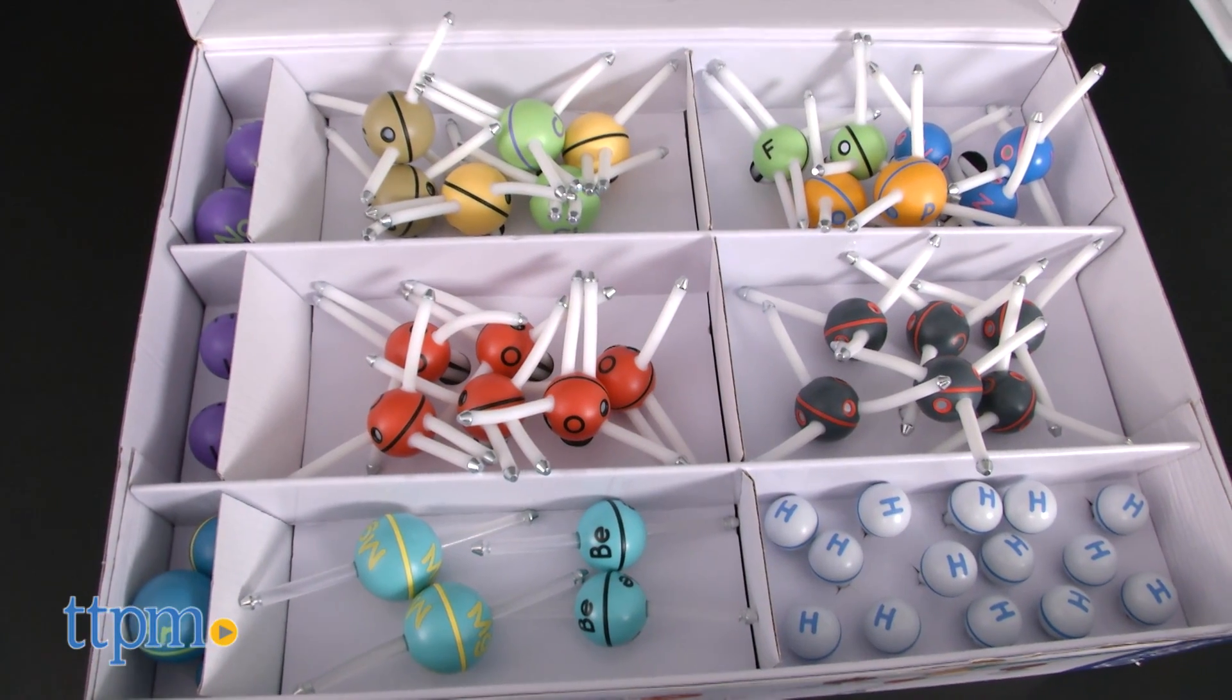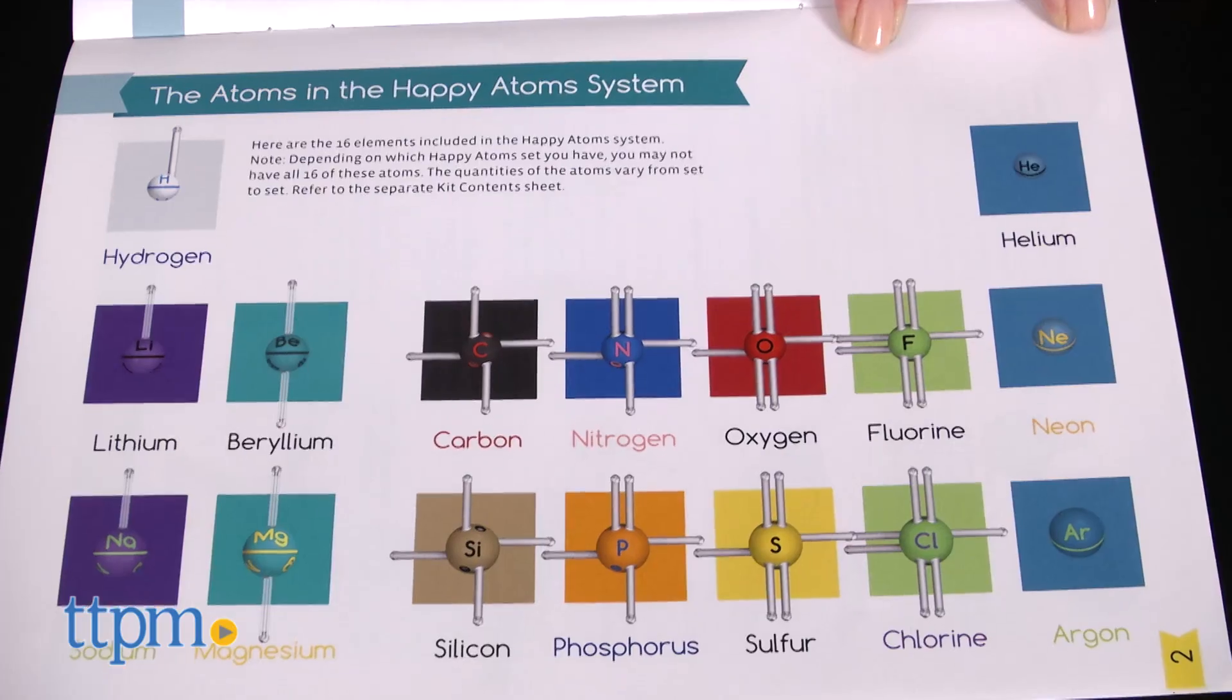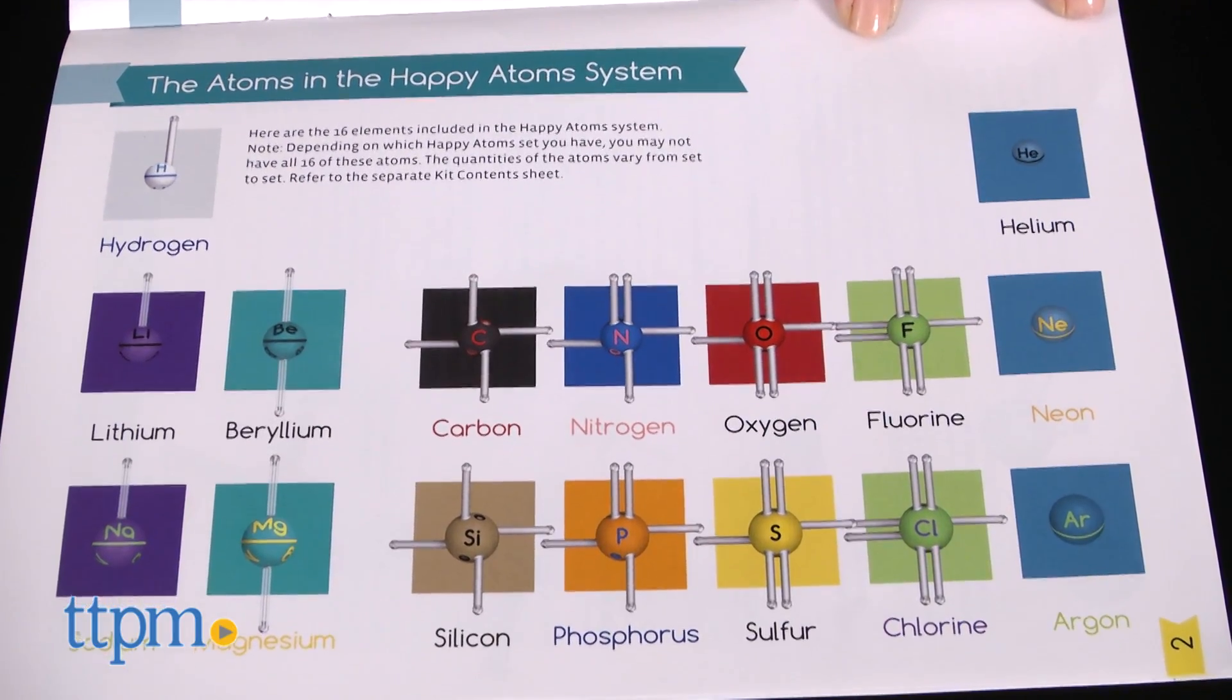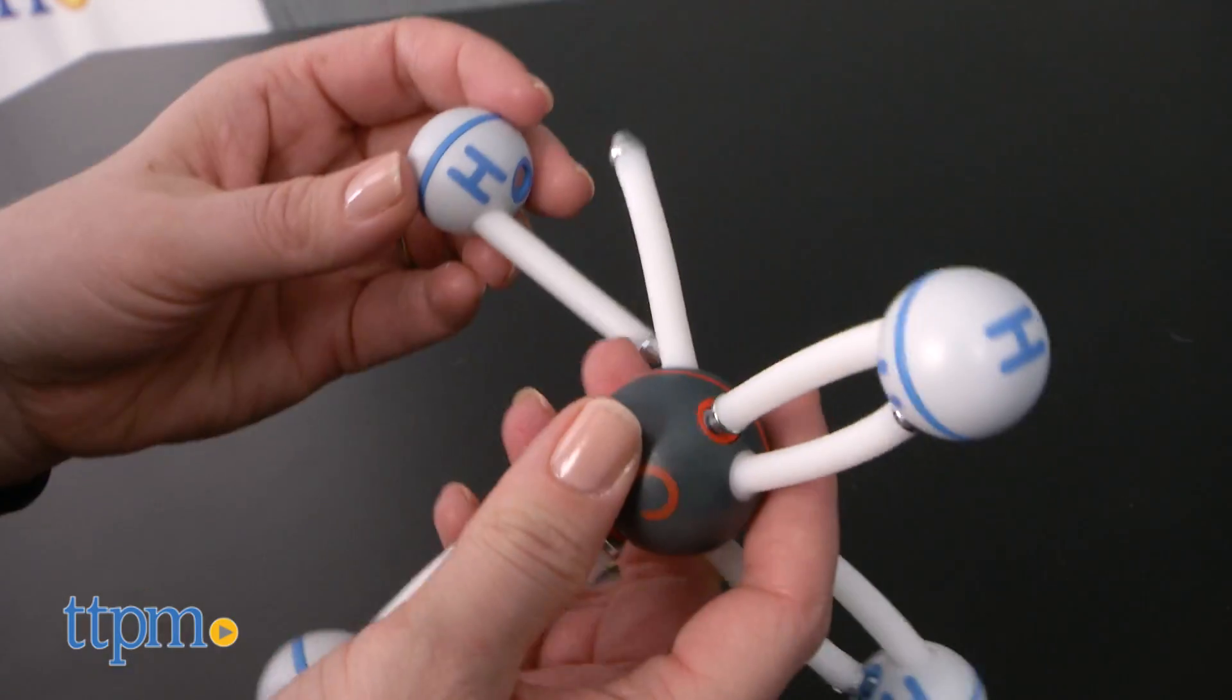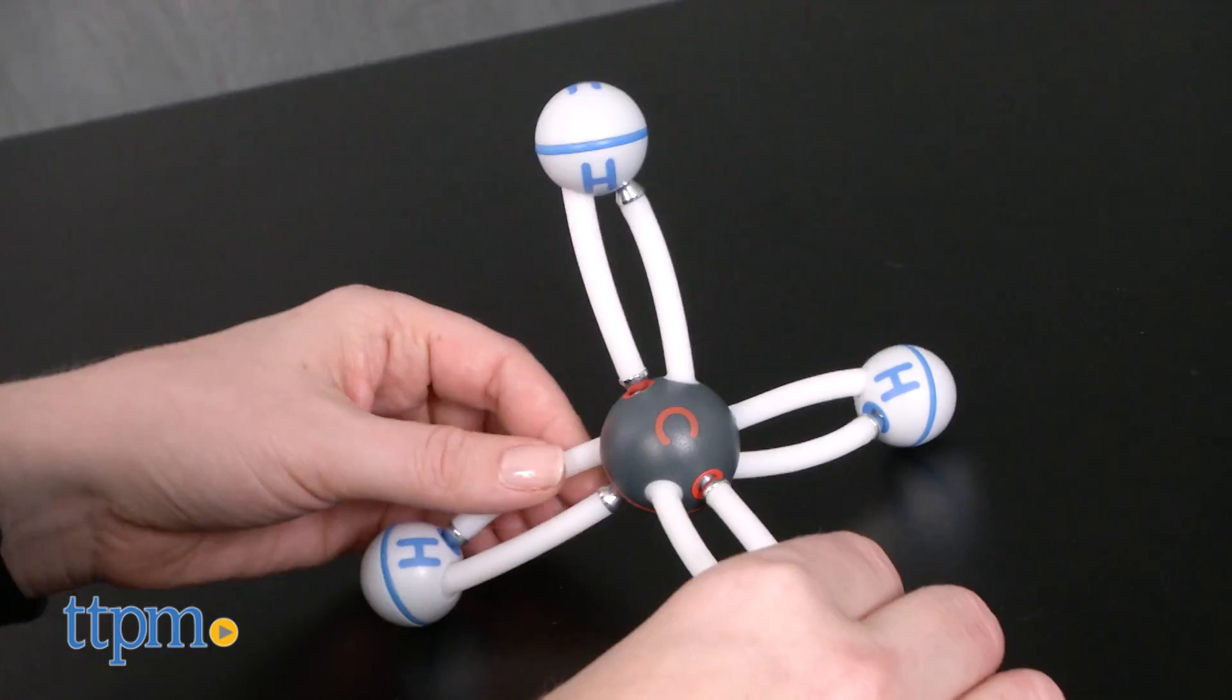Using the set's 50 atom models that represent 16 different elements, kids can assemble molecular models. The atoms stick together with magnets. Each atom's rubbery arms have metal tips that snap onto magnetic bonding sites on the atom spheres.